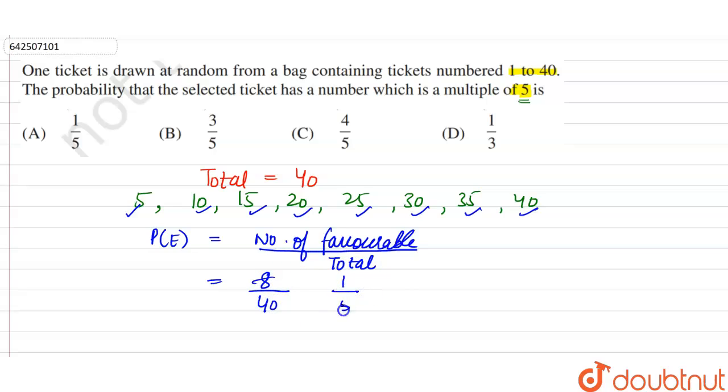So 8 into 1, 8. 8 into 5 is 40. So this is the answer and option A will be the correct option.